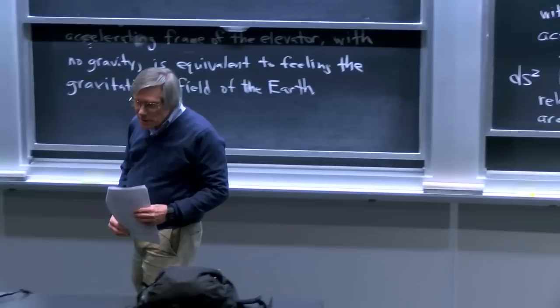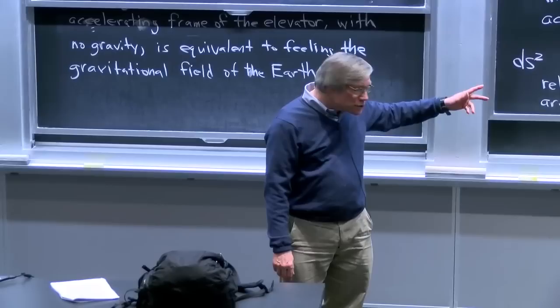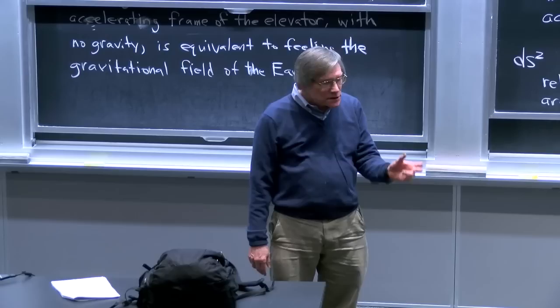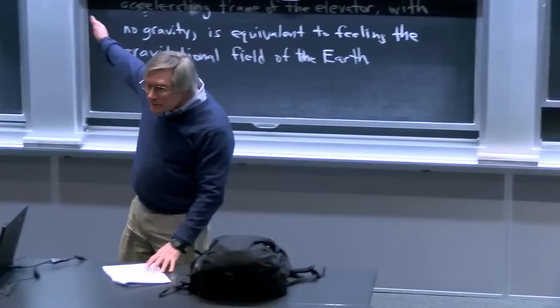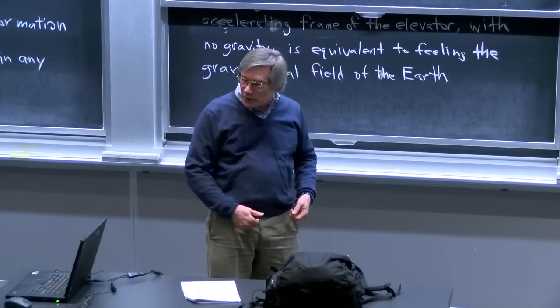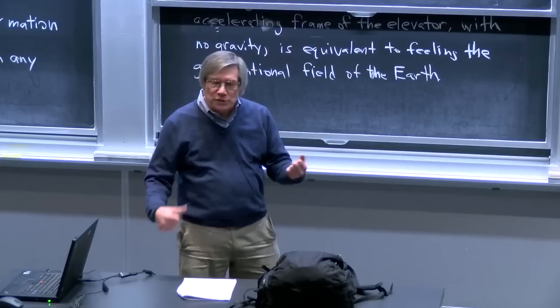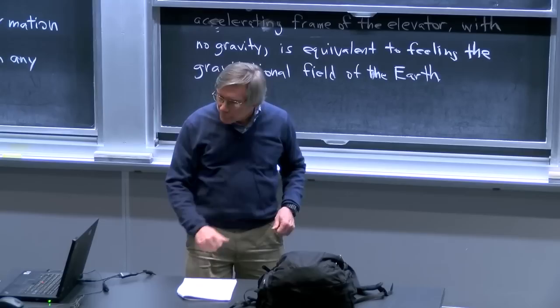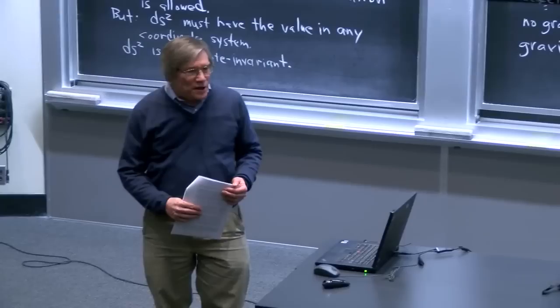So if ds² is positive, there will always be a class of free-falling observers for whom those two events occur at the same time, and ds² will be the distance between them as measured by those observers. If ds² is negative, there will be free-falling observers for whom those events occur at the same location, and ds² measures the time separation squared up to a factor of minus c². If ds² is 0, the two events are separated by just the right distance for a light pulse to travel from one to the other.